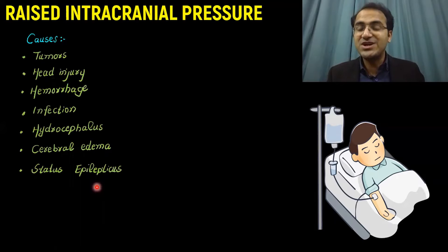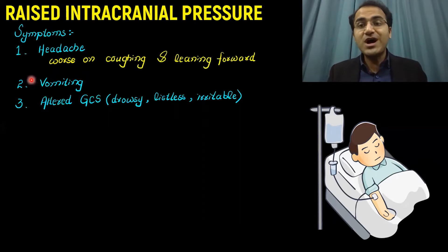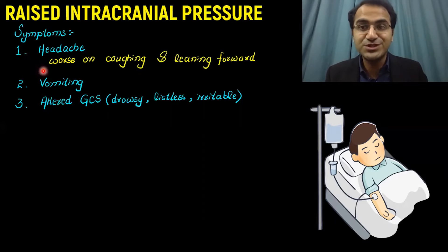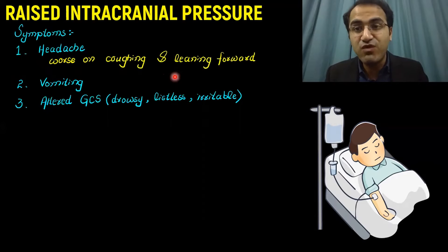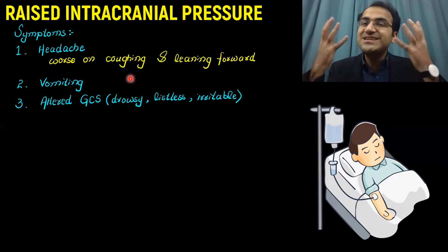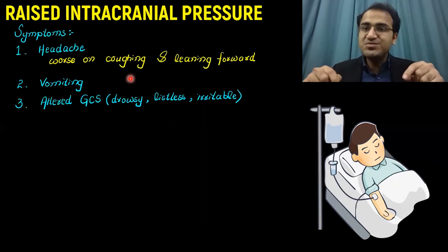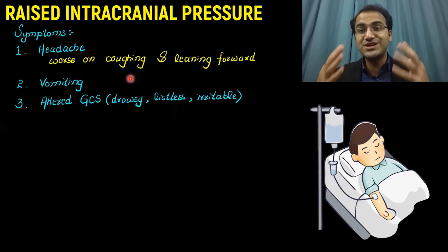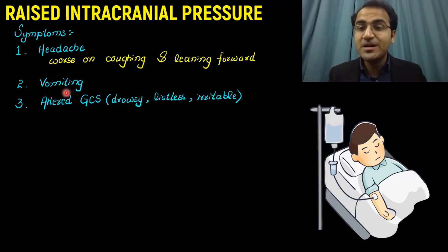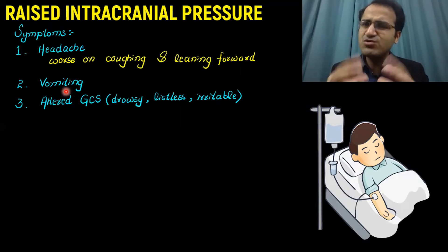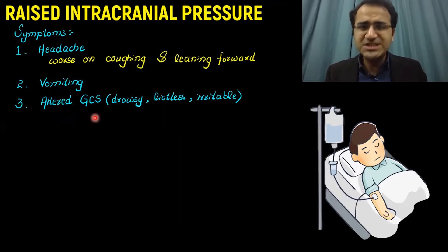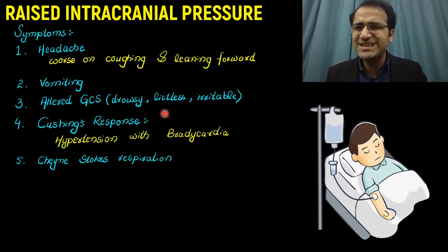What are the symptoms with which a patient presents in raised intracranial pressure? The patient will present with headache — a holocranial headache — which is worse on coughing and leaning forward, because coughing increases intracranial pressure normally, and these patients already have increased intracranial pressure, so coughing further exacerbates the headache. Vomiting occurs because increased intracranial pressure stimulates the chemoreceptor trigger zone. Patients also present with altered mental status — they are drowsy, listless, and irritable.